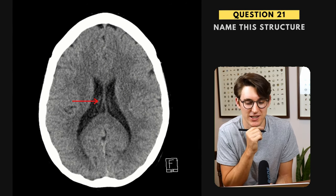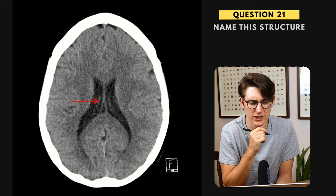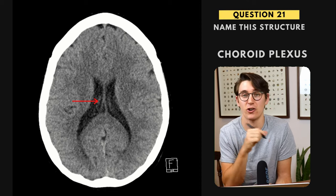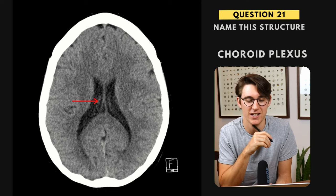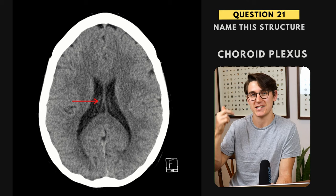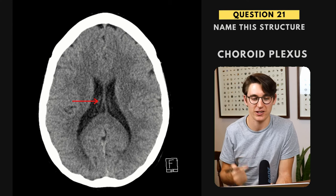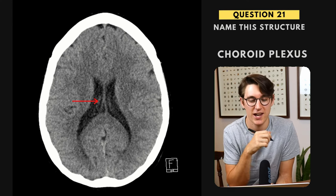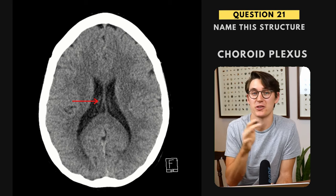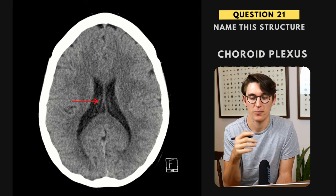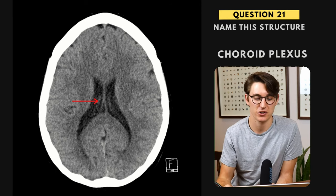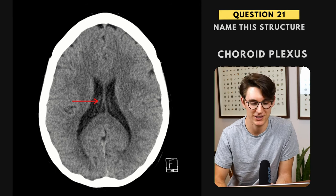Question twenty-one — on the CT scan we can see we're in the lateral ventricles, and this is the right-sided choroid plexus. This is where our CSF is produced. We were just at the sinuses where CSF is drained by the arachnoid villi and arachnoid granulations, and here's where our CSF is produced in the choroid plexus. The majority of the choroid plexus is found in the lateral ventricle, so this appearance is completely normal when you see it.